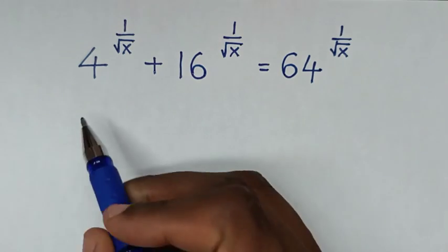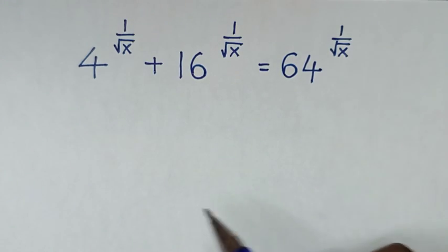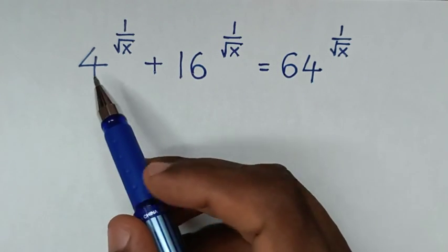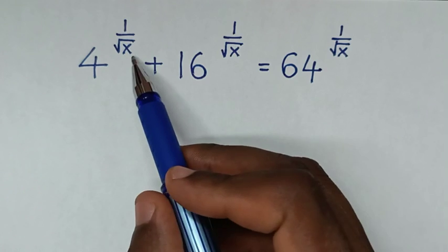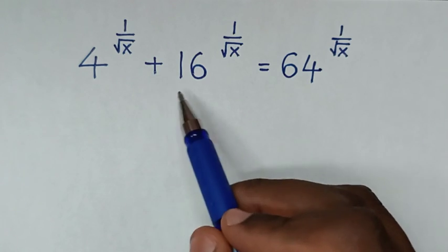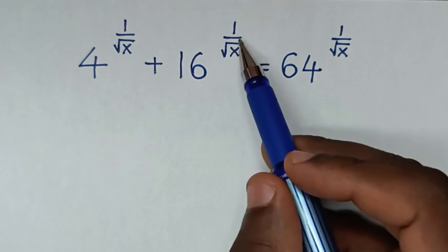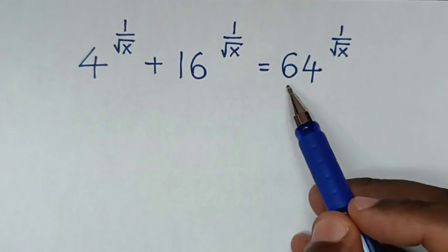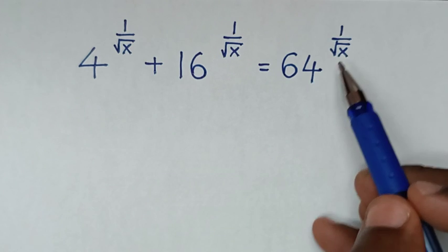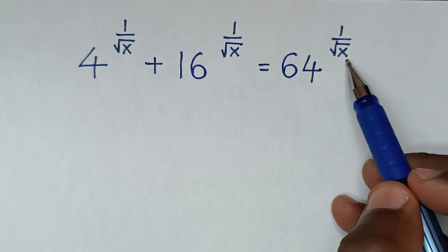Hello, you're welcome to solve this math problem which is 4 to the power of 1 over square root of x, plus 16 to the power of 1 over square root of x, is equal to 64 to the power of 1 over square root of x.